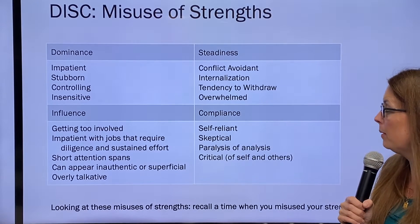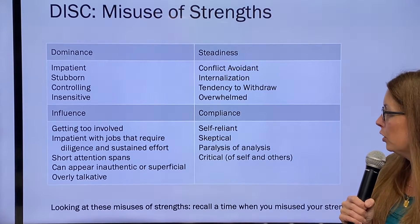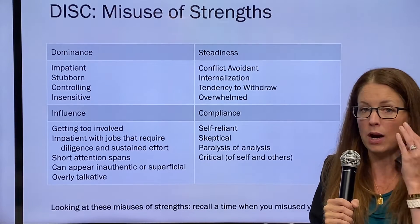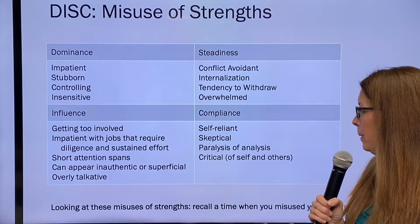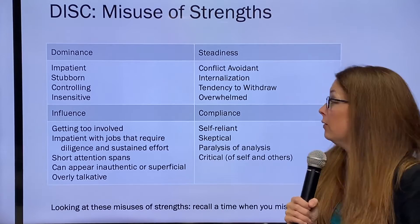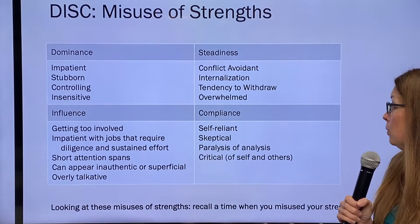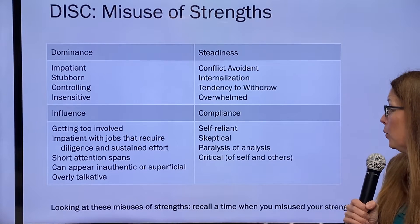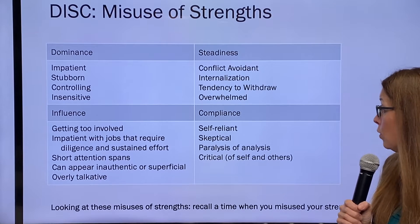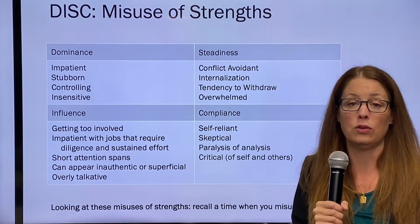Dominance types tend to be more impatient, stubborn, controlling, and sensitive. Influence types can get too involved, can be impatient with tasks requiring sustained effort, have shorter attention spans, or can appear inauthentic or be overly talkative. Steadiness types can be conflict-avoidant, tend to internalize and withdraw, and feel overwhelmed easily. Compliance types can come across as self-reliant and skeptical, suffer from paralysis of analysis, are very slow to make decisions, and can be critical.